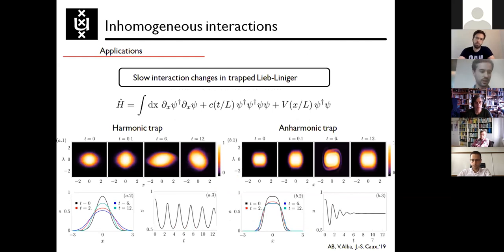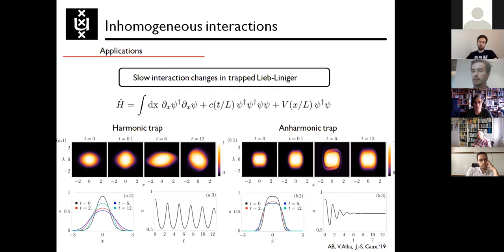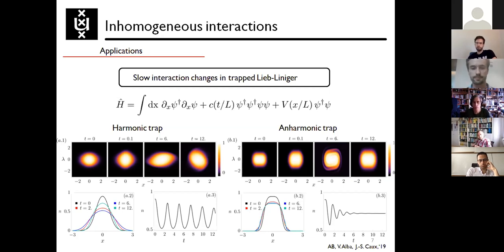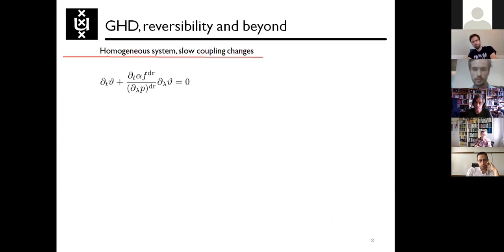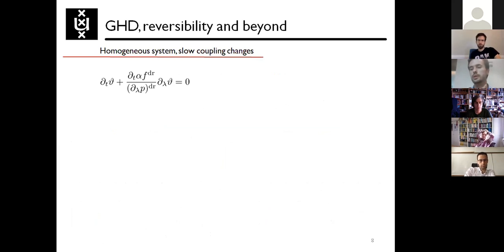Setting aside the possible checks, let me flash some possible applications. For example, you can now study a slow interaction quench in Lieb-Liniger in a trap. You can follow with GHD the behavior of the filling and compute observables for which we have exact expressions — for example in this case, simply the density. Now, in order to move to the second part, let me make a very trivial observation whose consequences are not trivial. Let me consider the GHD equation in the homogeneous case in space but with some inhomogeneity in time.